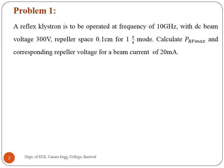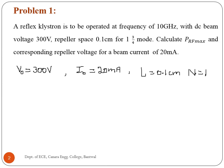Given parameter values: DC beam voltage V0 is equal to 300 volts, beam current I0 is 20 milliamperes, repeller space L is 0.1 centimeter, mode is equal to 1 and 3/4, and frequency is 10 gigahertz.